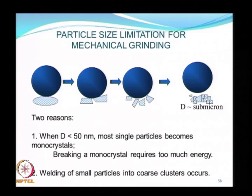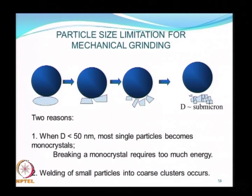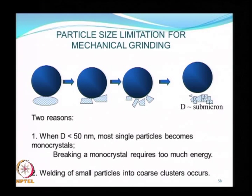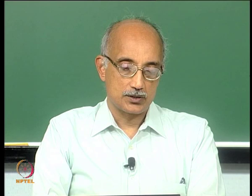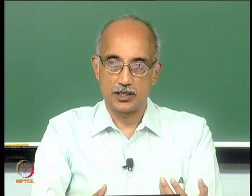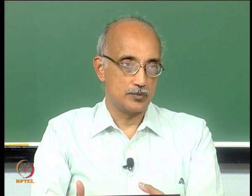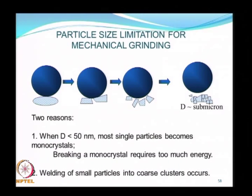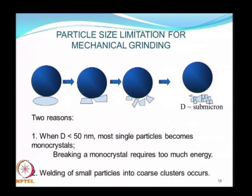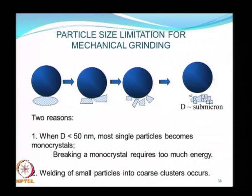There is a size limit in mechanical grinding for two reasons. As size decreases, particles become mono-crystalline in nature and the energy requirement to break them keeps increasing—the particle itself becomes more and more unbreakable as it gets smaller. In addition, agglomeration begins to happen, and welding of small particles into clusters begins to happen. The longer you run the mill, the stronger the inter-particle cohesive forces become, and sintering begins to happen; clusters that form over long periods of operation can be very difficult to break down.